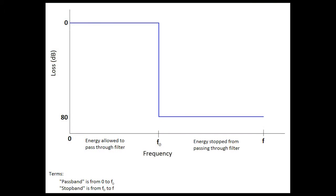The picture shown here is actually a simple illustration of a low-pass filter. From zero to F-naught frequency, which is the x-axis, that range of frequencies the filter is allowing the energy to pass through, so it's called a pass band — a band of frequencies where the energy is passed through.